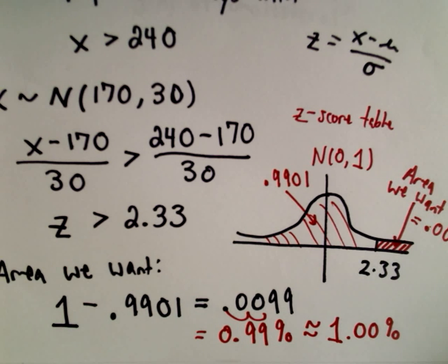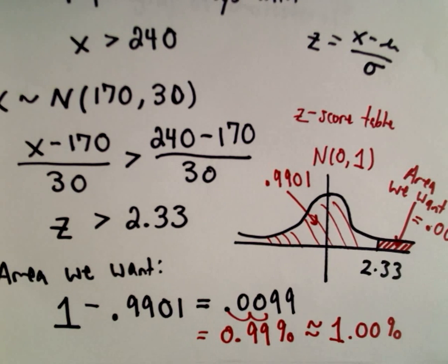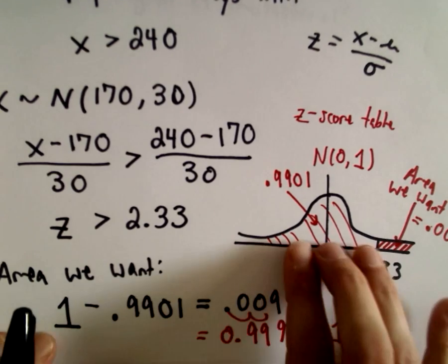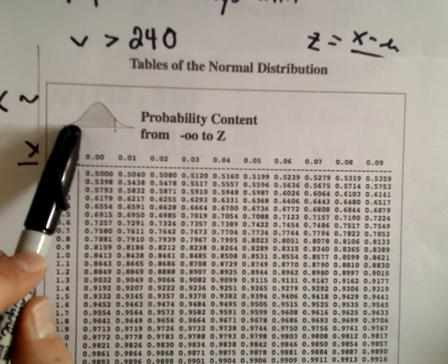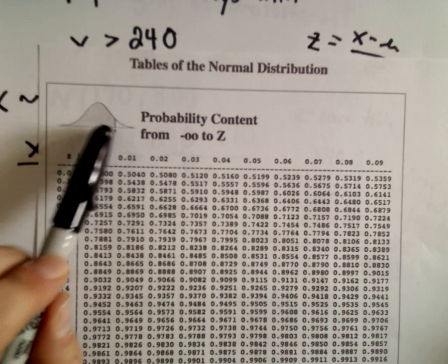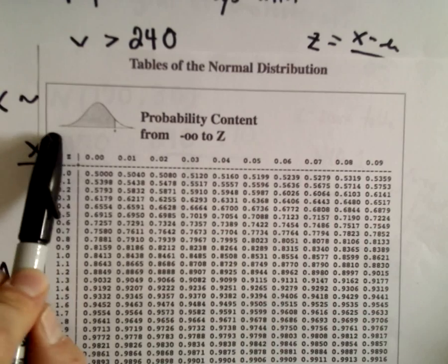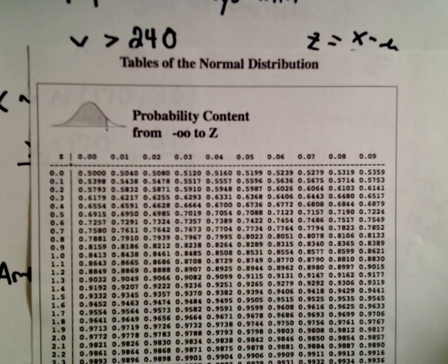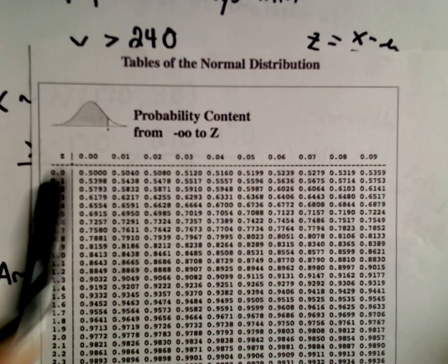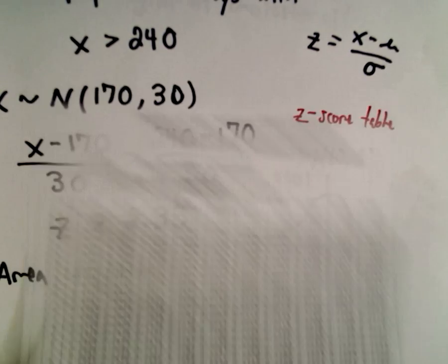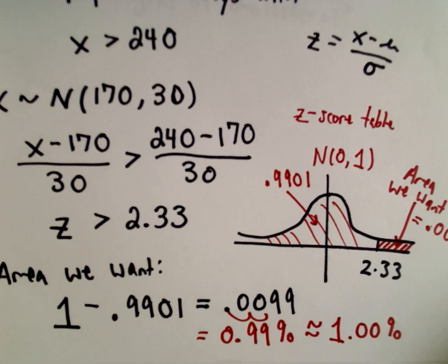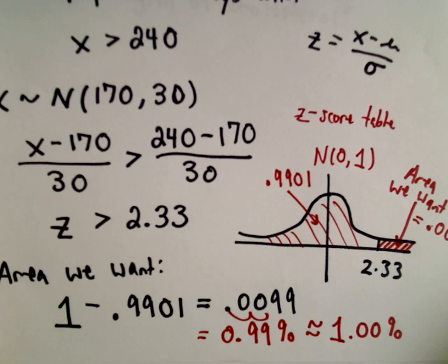Nothing too crazy here, just doing this standardizing of the variable. The other thing I wanted to illustrate in this problem is how you have to be careful when you read off the table. The table is telling you values to the left of the z-score. There are some tables out there that will tell you the value to the right. But the one that I'm using, the ones that I've seen most often tell you the value to the left. So if you do want the area to the right, all you have to do is the same thing as we did in this example, and just take 1 minus the value.